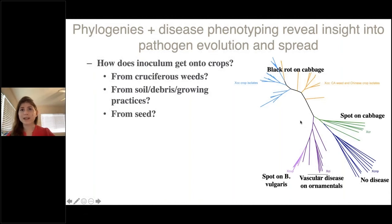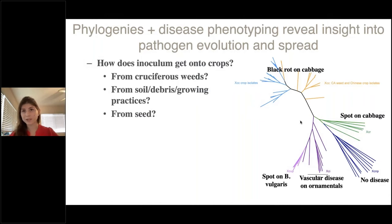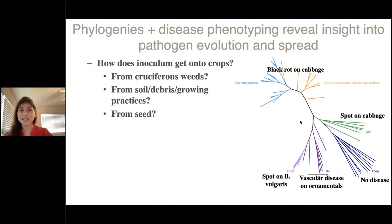We saw very strong correlations between genetic relatedness and disease type and host range within the five main clades from this phylogeny. These correlations provided valuable insights with the potential to help growers determine best practices for disease control. An especially important question is where the disease is coming from — if you know its source, you can try to prevent the bacteria from getting onto your crops in the first place. Several options have been proposed: weeds related to Brassica crops can be infected by XCC and may overwinter and spread back to crops; bacteria can survive on crop debris and soil; and XCC can be transmitted on seed, in which case you'd expect to see different strains each growing season.